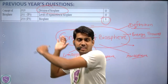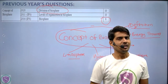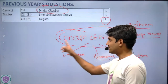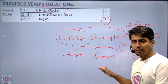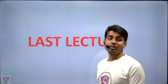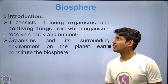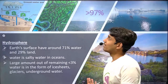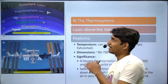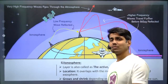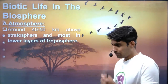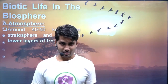With this understanding of the concept of biosphere, we will now move on to the next phase. We have already studied the lithosphere, hydrosphere, and atmosphere — including stratosphere, troposphere, thermosphere, mesosphere, and exosphere. Now we just need to add the biotic life component onto all of these spheres.